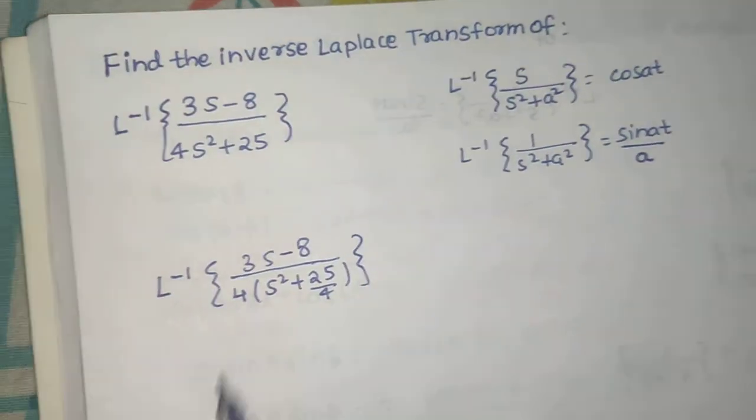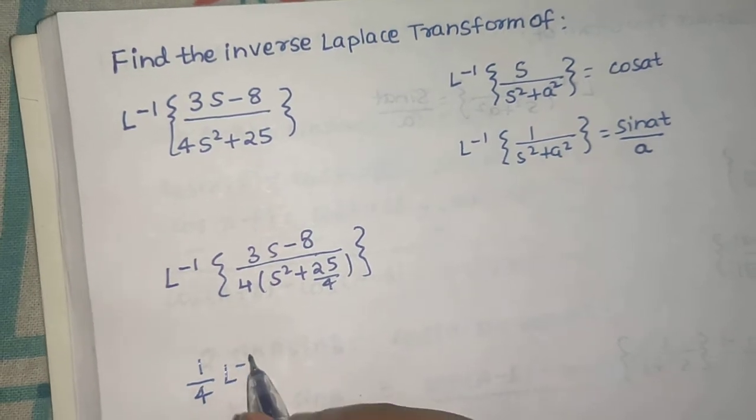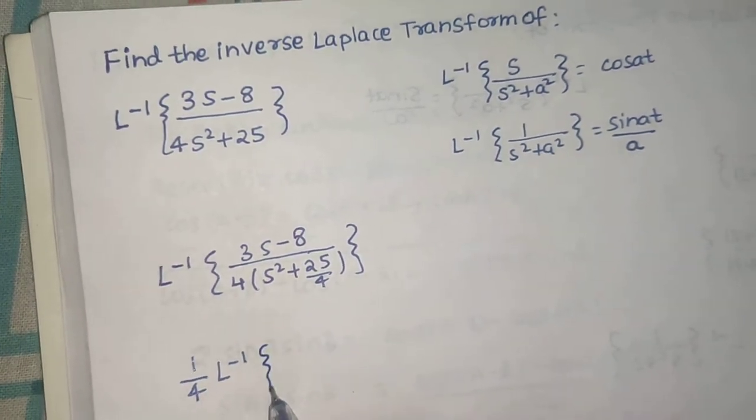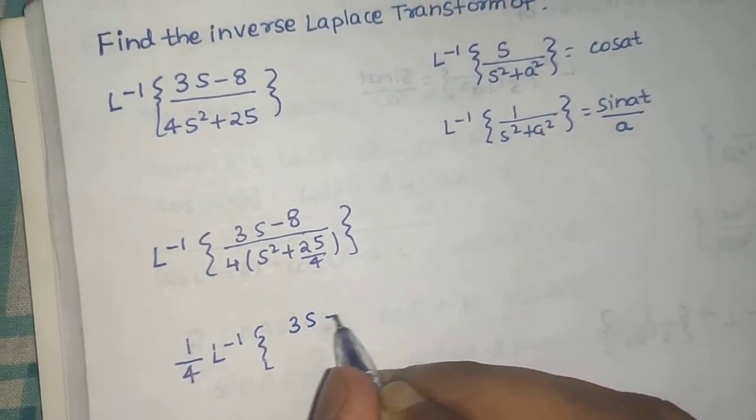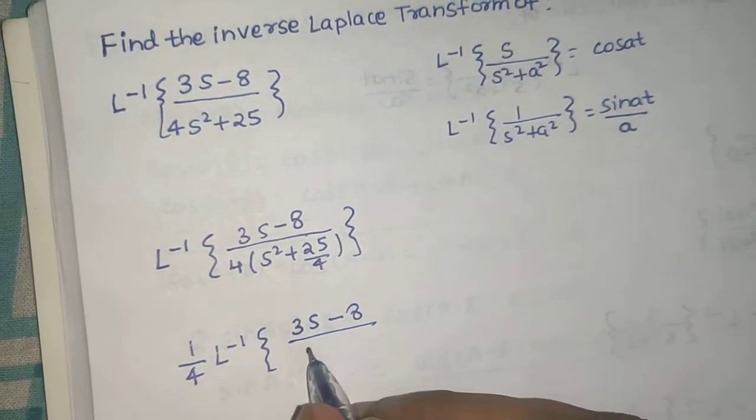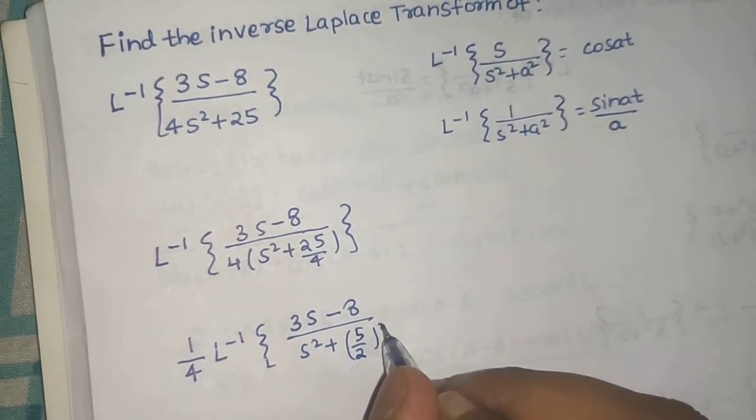Now since 4 is a constant, you can take that out of the inverse Laplace transform and you are left with 3s minus 8 divided by S square plus, this can be written as 5 by 2 whole square.